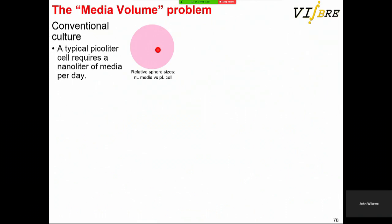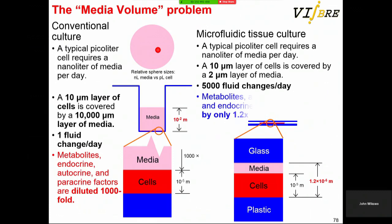One thing I've focused on for years is the volume problem. In conventional cell culture, you have a 10-micron layer of cells. A cell has a volume of a picoliter and requires a nanoliter of media a day. You accomplish this by putting a centimeter of media above your cells, changing media once a day, but your signaling factors are diluted a thousandfold.